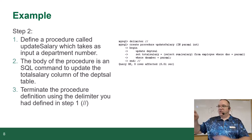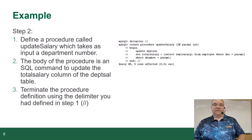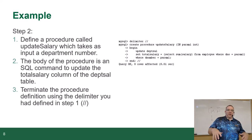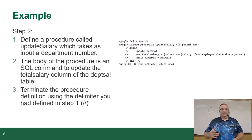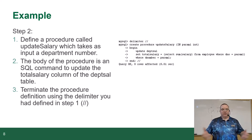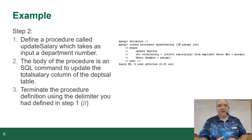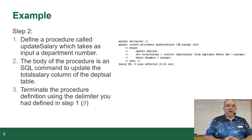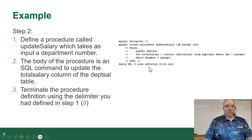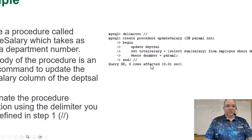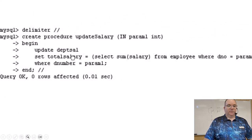So we'll define a procedure called update_salary. It takes an input as a department number. The body of the procedure is an SQL command that will update the appropriate row. At the top, I said DELIMITER // — so at that point I'm telling MySQL: until further notice, ignore semicolons. Double slash is now your end of command, replacing the semicolon.